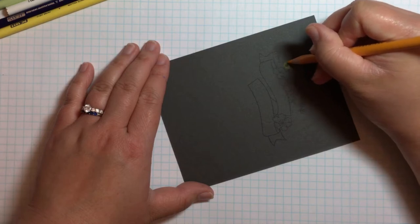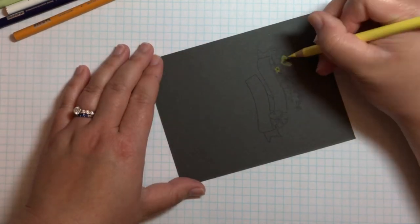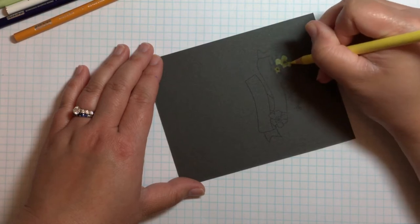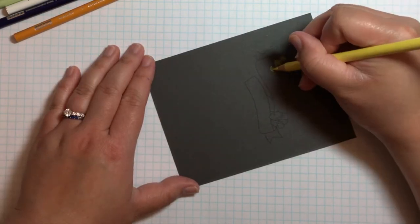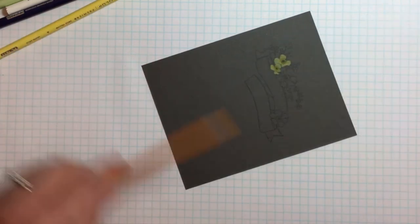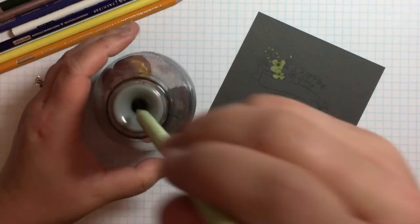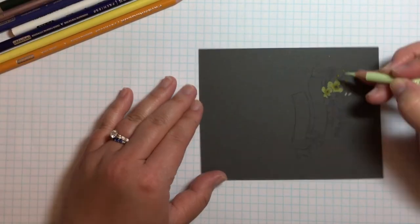Then I started coloring the image with my Prismacolor colored pencils. If I wanted a brighter look I would have lightly colored the image first with a white colored pencil and then gone over it with various colors. But I wanted a softer look so I used the colors directly over the gray cardstock. You can see that even on the gray the yellow flowers really pop.